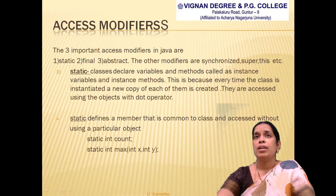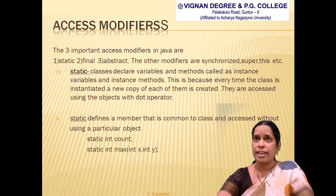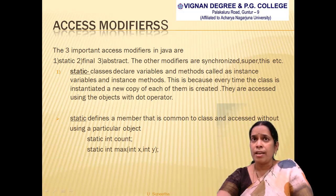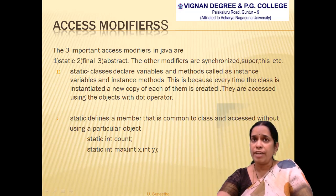Moving on to the second topic: access modifiers. In Java, there are three important access modifiers — static, final, and abstract. First, instance variables and instance methods belong to each object; a copy of each is stored in every object, and they are invoked using the object name. The keyword 'static' defines static members, also called class members, and can be applied to both variables and methods.